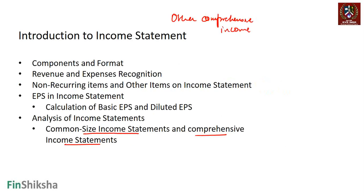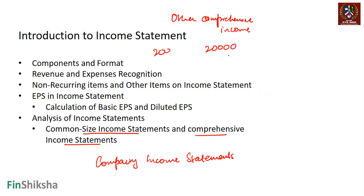When we look at multiple companies' income statements, unless we use some sort of ratios we can't really compare income statements between two companies. There's a company that makes revenue of 200 crore and there's a company that makes revenue of 20,000 crore — cost here is 150, cost there is 13,000 crore. Unless we really dig deeper into the numbers, we can't compare these two companies because their size and scale are completely different.